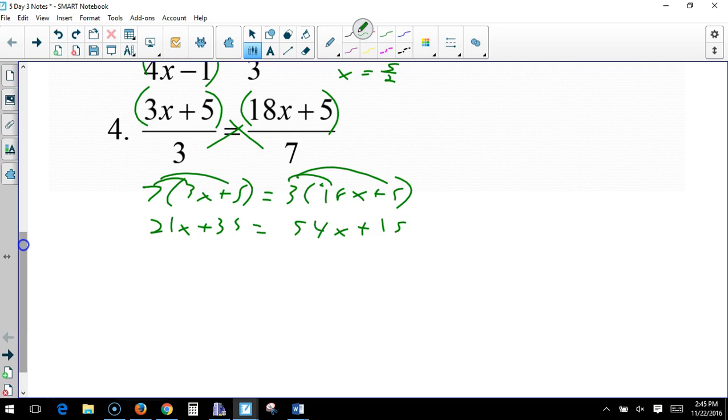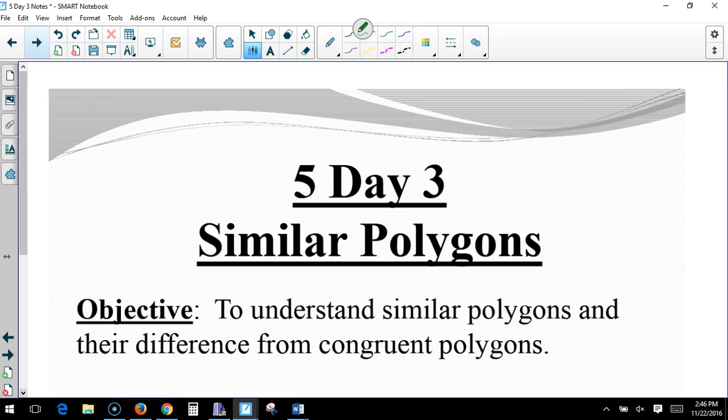I'm going to subtract 21x. And let's subtract 15. That gives me 33x equals 20. Divide by 33, x equals 20 over 33. Ugly, but that's what it is. Okay, moving on to day 3.